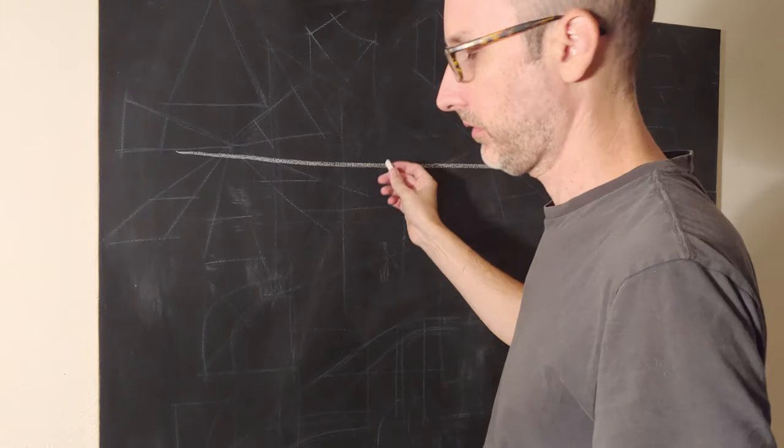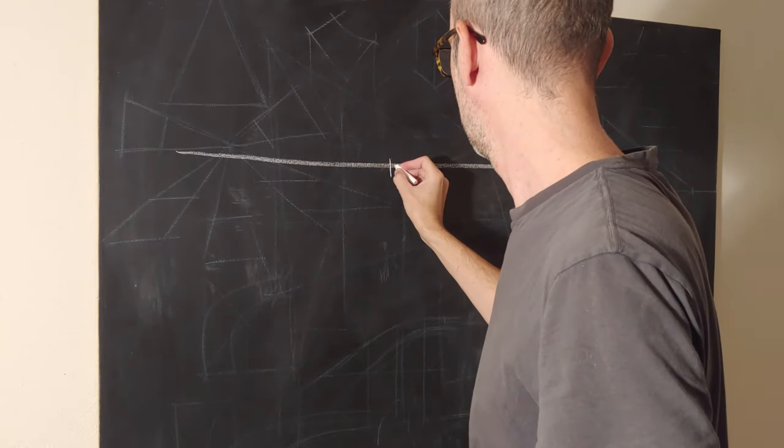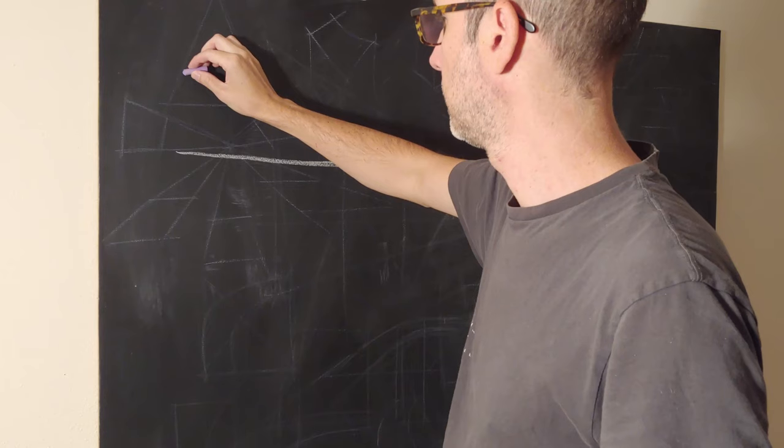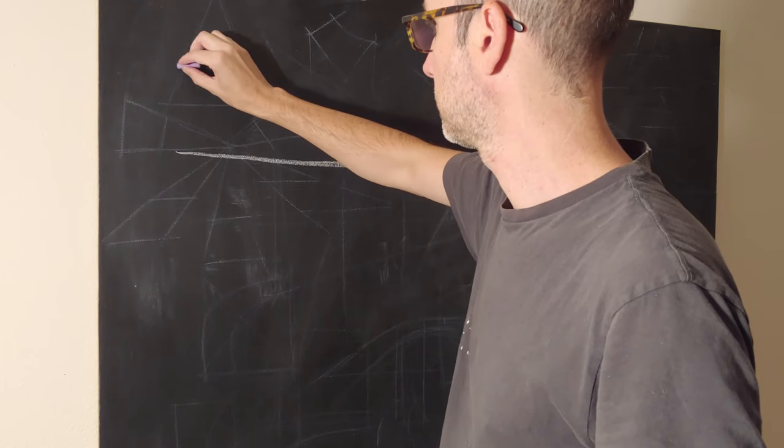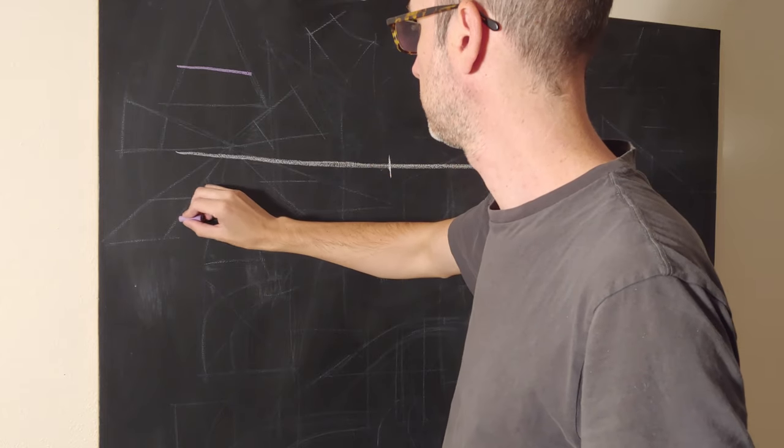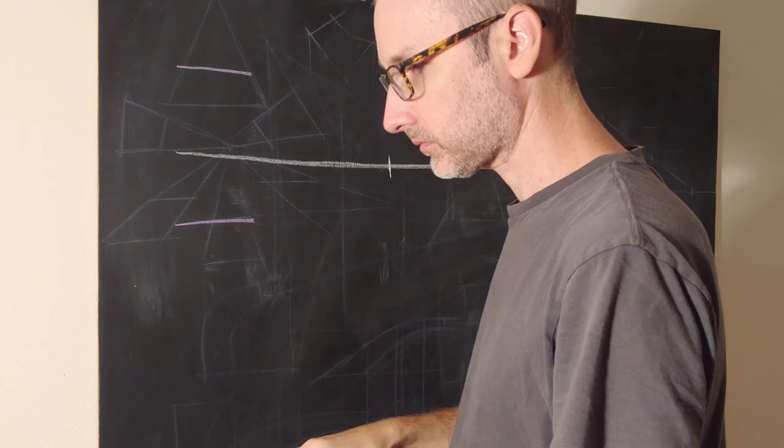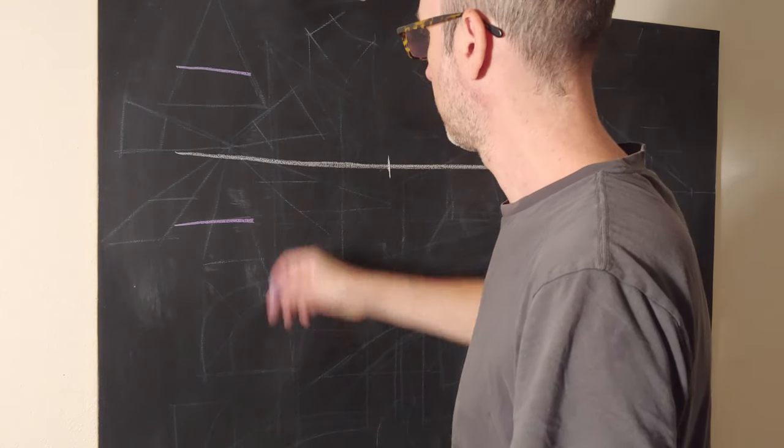So here we've got our horizon line and our vanishing point. Here we're going to take a box. I'm going to color code for convenience here.